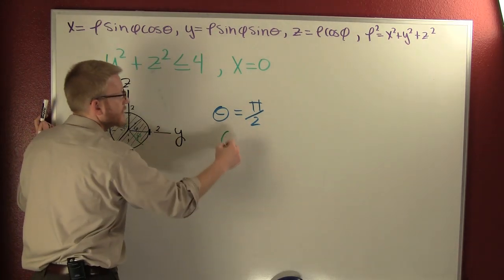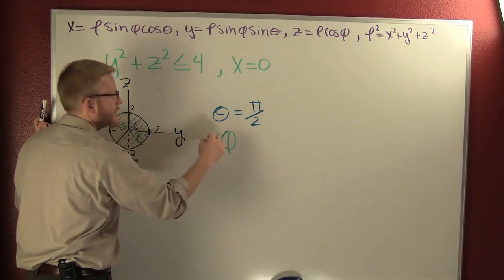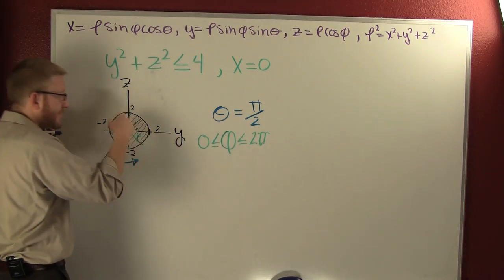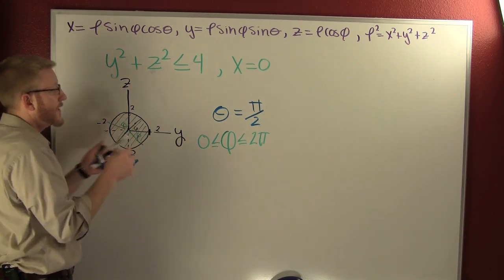So my phi is going to be in between 0 and 360 or 2 pi. Phi gets to rotate all the way around.